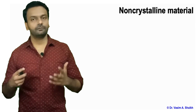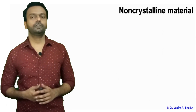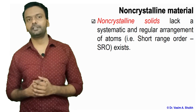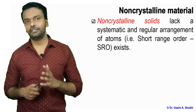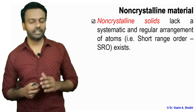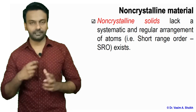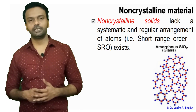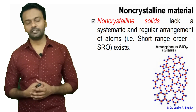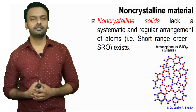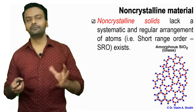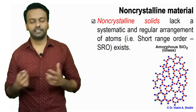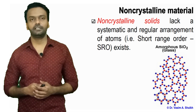Now let us see what non-crystalline material is. Non-crystalline materials are basically materials which lack a regular arrangement of atoms and are in short range order. That means atoms are arranged in short range order — they don't have a long range order where atoms repeat throughout the entirety. Such solids are called non-crystalline solids. Here you can see amorphous silicon dioxide, or glass, and in its structure all atoms are randomly arranged. It does not have any repeating unit cell — it is very randomly arranged. Such types of materials are non-crystalline solids.